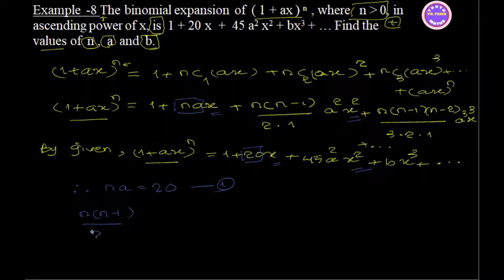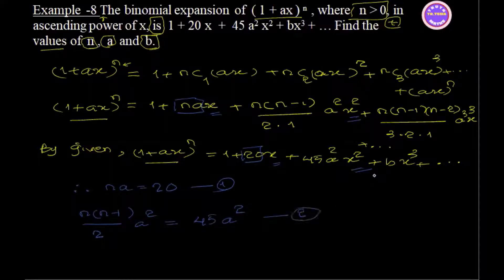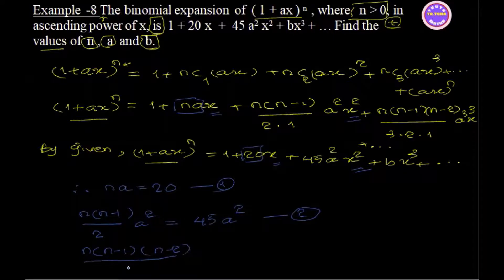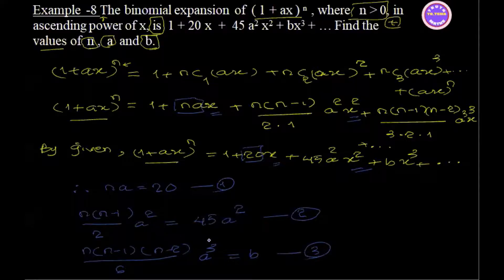Now, from the expansion, 45 is from equation 2. That means n(n-1)(n-2) divided by 3 times 2 times 1 gives equation 3.